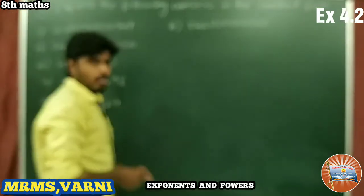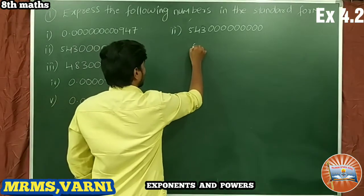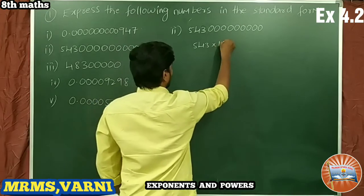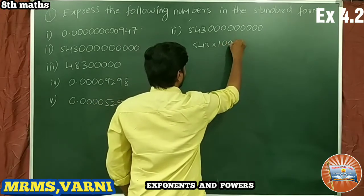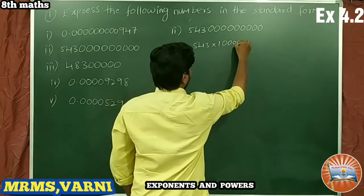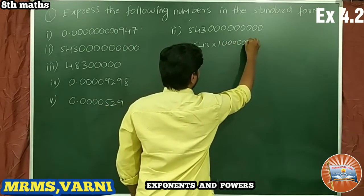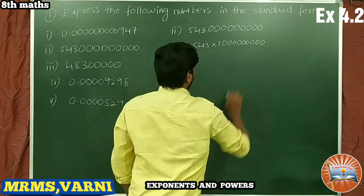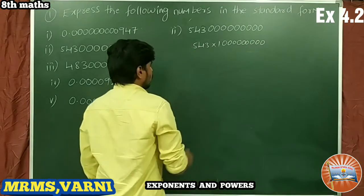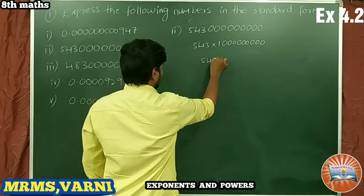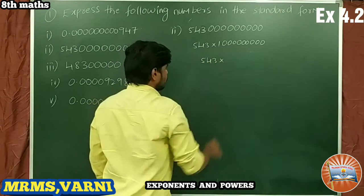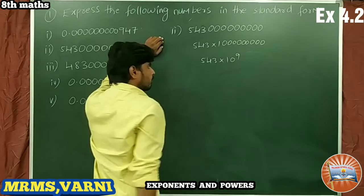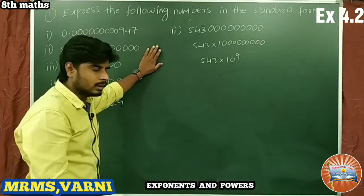So we can write this as 543 × 10^9. That is our standard form answer for problem 2.